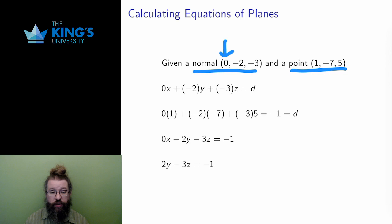The normal is the vector a, b, c, which gives the coefficients for most of the equation. I write the equation with these coefficients. 0x plus negative 2y plus negative 3z equals d. Then d is the only unknown.